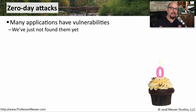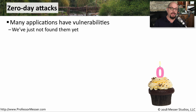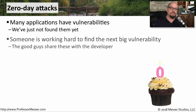Our operating systems and the applications that we use on these operating systems are very complex, and undoubtedly there are vulnerabilities that exist in those applications and that operating system that we simply haven't found yet. There are researchers all over the world trying to find every possible vulnerability they can for every operating system and every application. When someone does find a particular vulnerability, it's very common for that researcher to share that information with the developer of that application or the manufacturer of that operating system. There's usually a lot of development work that then takes place to fix or resolve that particular vulnerability.